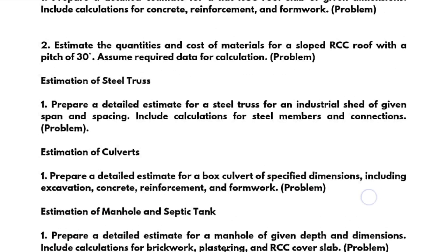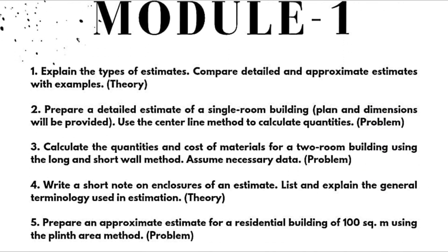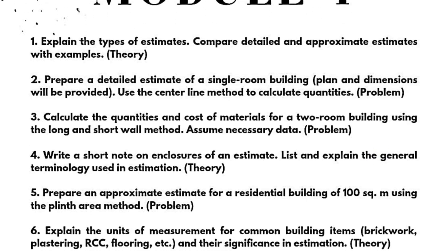From Module 1, first topic is types of estimates: explain the types of estimates and compare detailed and approximate estimates with examples — this theoretical part may directly carry 20 marks. Next problem: prepare a detailed estimate of a single room building — plan and dimensions will be provided in the examination. Use the central line method to calculate quantities. You can also refer to the 18CV71 paper for a variety of problems.